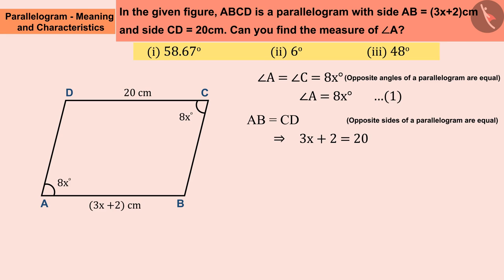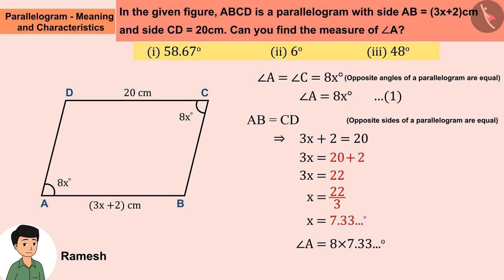Let us now see how Ramesh, Suresh, and Kamlesh have solved this question. Let us see how Ramesh solved it. Ramesh did not change the sign while solving the equation. He made 20 plus 2 instead of 20 minus 2. Therefore, according to Ramesh, the value of X is found to be 7.33 degrees. By substituting the value of X into equation 1, Ramesh gets the value of angle A, that is 58.67 degrees, which is the wrong answer.